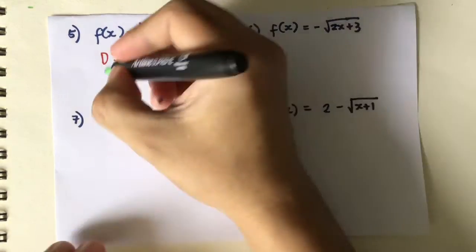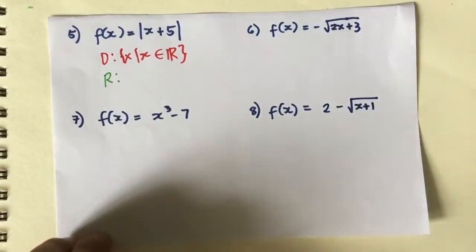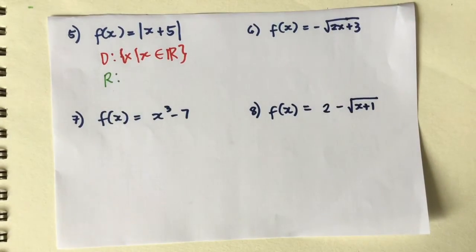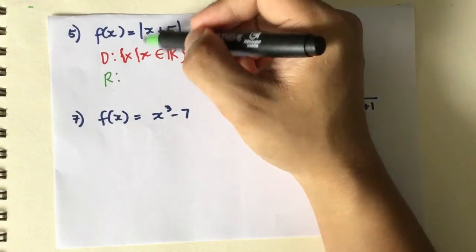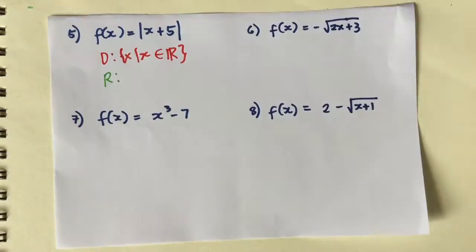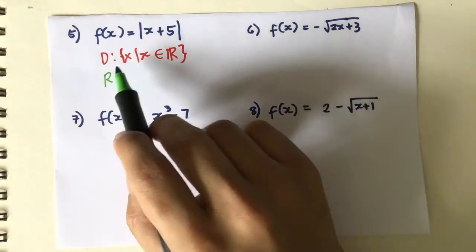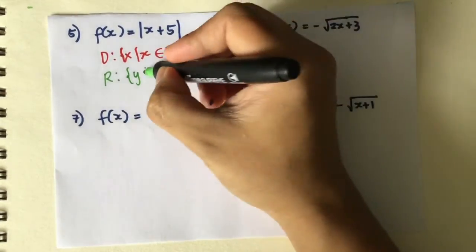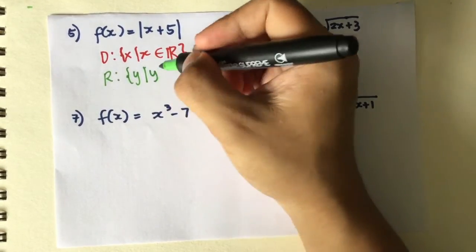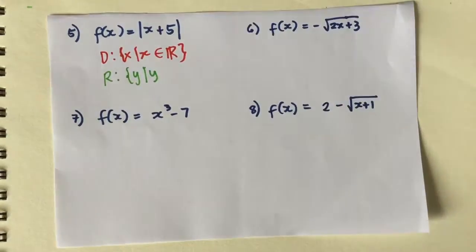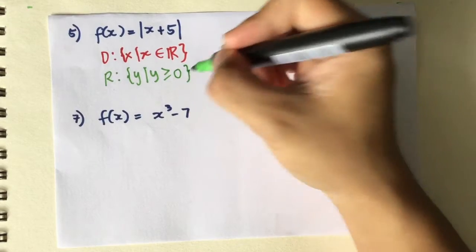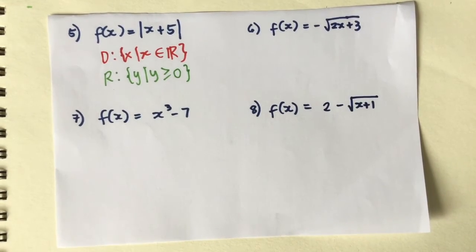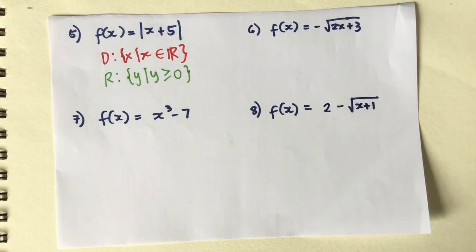How about the range? Remember the definition of absolute value — the range here is affected by the absolute value. When you say absolute value, it will always give you a positive result, so you will never get a negative value for y. Which means y is always greater than 0.